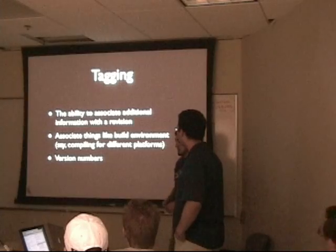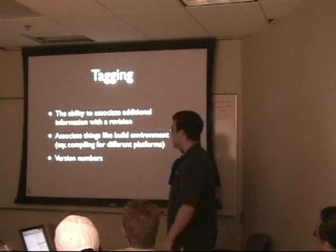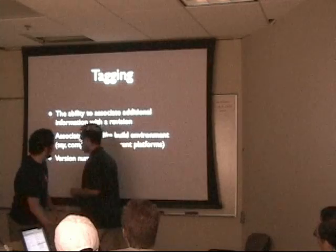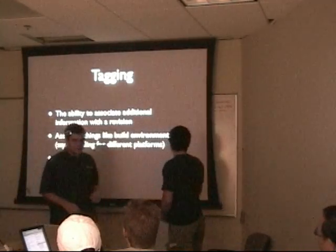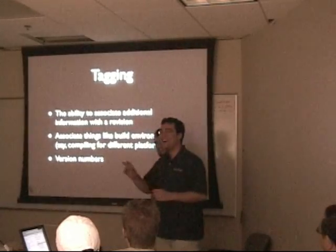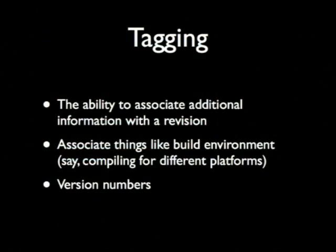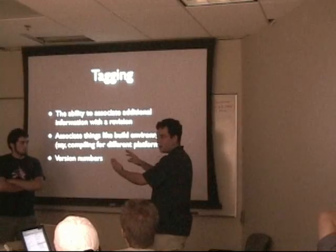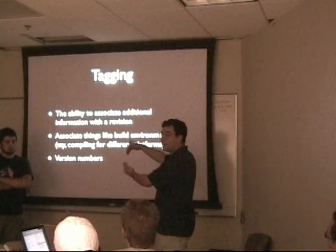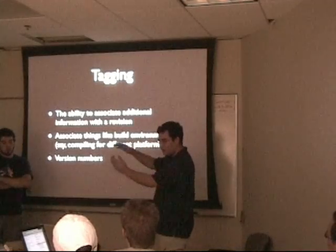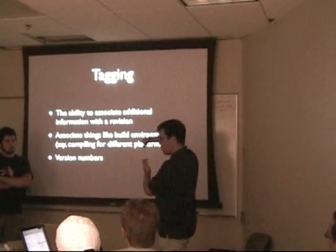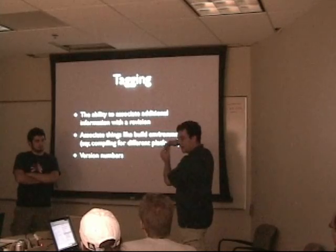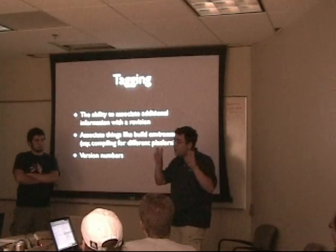There's also tagging. Tagging is the ability to associate some sort of metadata with a particular release. So if you commit something as your initial import, you have revision 1. Then you move along, change something, commit — revision 2. You go on. These are called revision numbers. So you can add a tag — say you're at revision 376 or 4 million — and you can tag it and say, hey, I want this to be called release version 1.0 of my software.